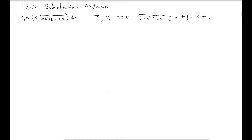This is scenario one — if a is greater than zero. But if a is less than zero and c is greater than zero, the substitution you should make is: the expression equals xt plus or minus √c.